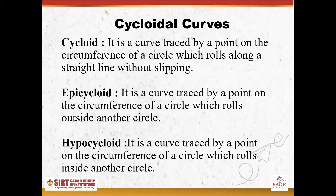The first one is a cycloid. A cycloid is a curve generated by the fixed point on the circumference of a circle which rolls along a straight line without slipping. The curve generated by that fixed point is known as a cycloid.